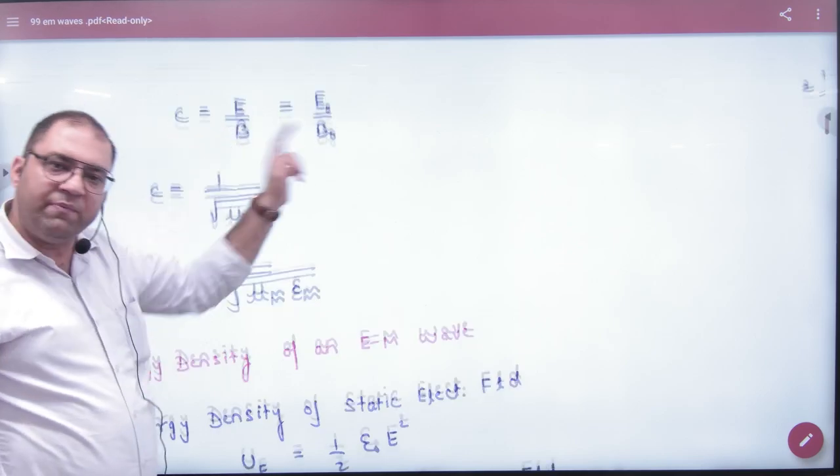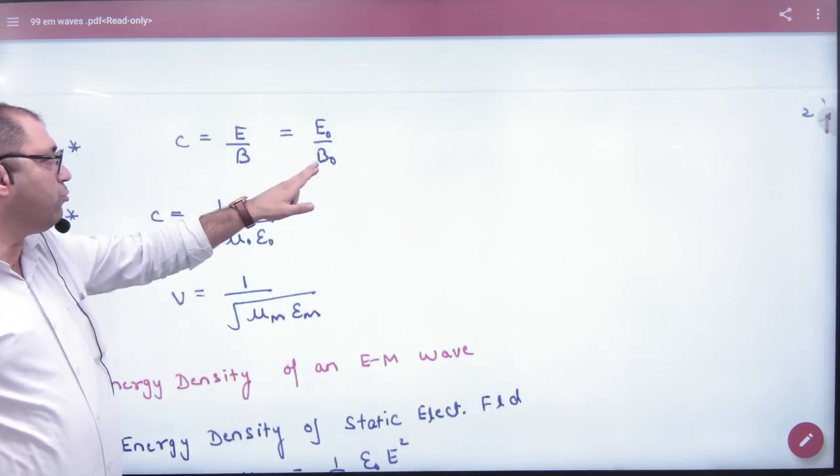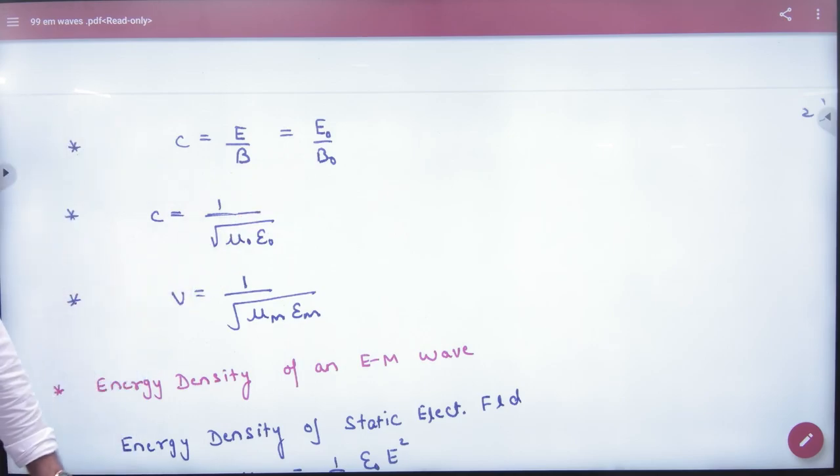If E is max, then B will be max. So if you have E₀ given and B₀ asked, then cross multiply - B₀ can be calculated.